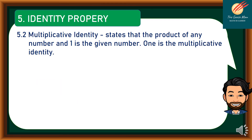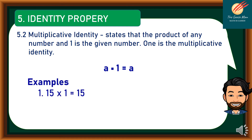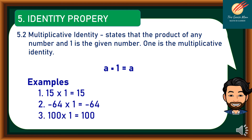The second type of identity property is the multiplicative identity. It states that the product of any number and 1 is the given number. In symbols, a times 1 equals a — 1 is the multiplicative identity. Examples: 15 times 1 equals 15; negative 64 times 1 equals negative 64; and 100 times 1 equals 100.